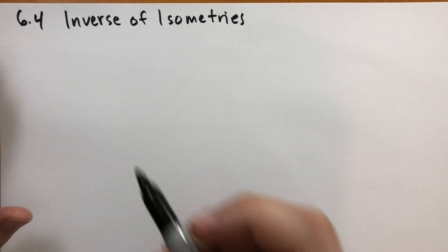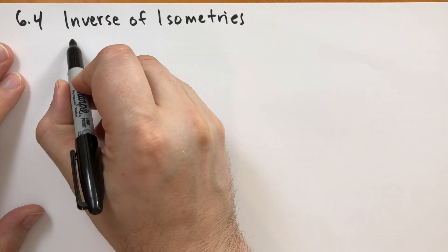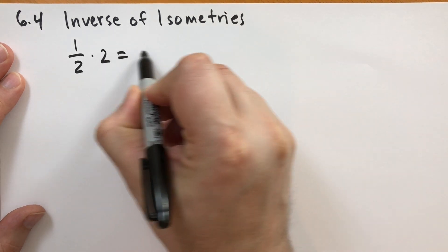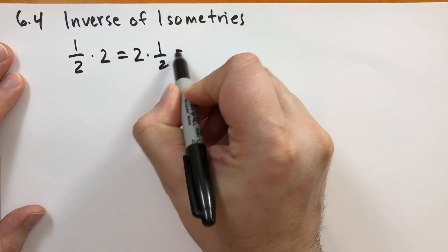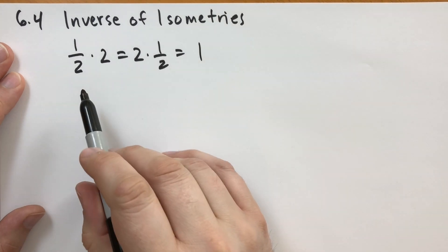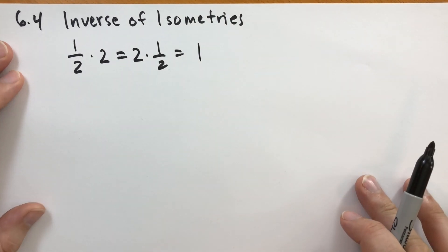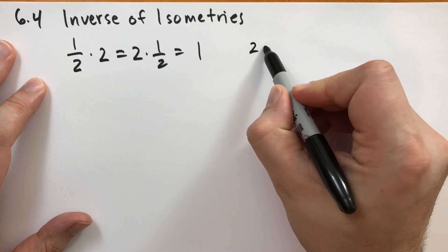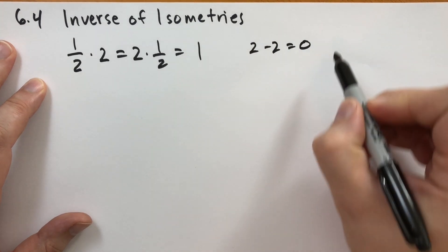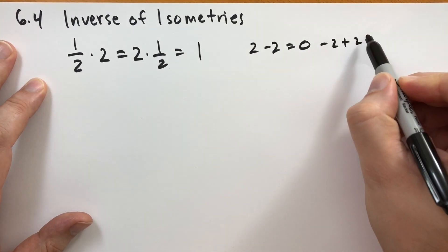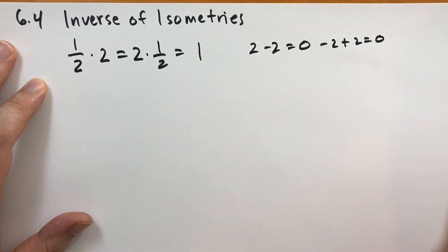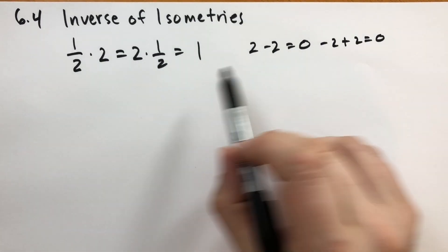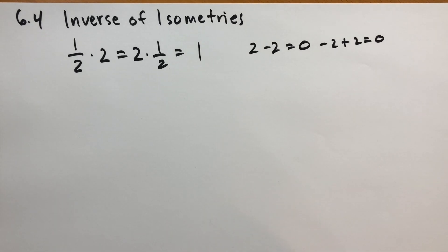So inverses, as you are aware in mathematics — the inverse of 2 is 1/2, so when you multiply 1/2 by 2 you get back 1. For every real number there's an inverse you can multiply by. There's also an additive inverse: 2 minus 2 equals 0, and minus 2 plus 2 also equals 0. So 0 is the identity for addition and 1 is the identity for multiplication.